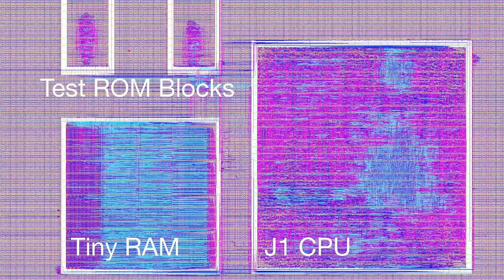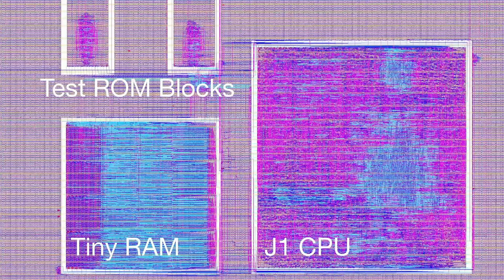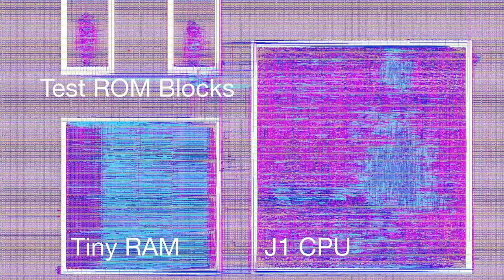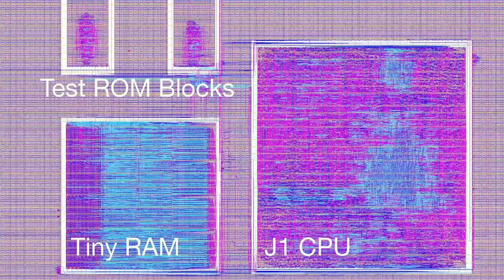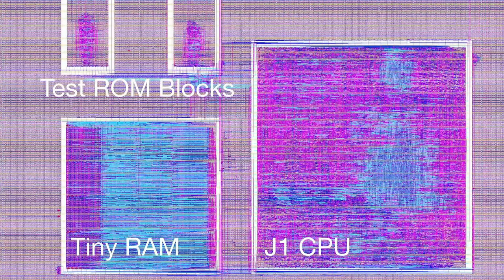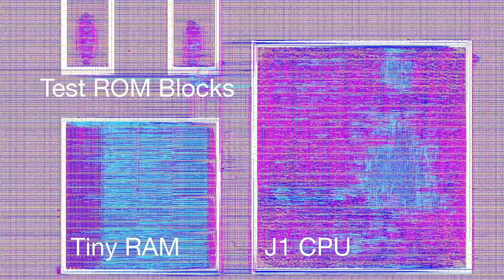We need to look at the tools and identify what standard cells, register file blocks, and SRAM blocks are missing. The SRAM situation is particularly bad — what should be 16 kilobytes is only 128 bytes. That is not reasonable. There's still a lot to do on the open side, but it's an exciting time because suddenly it's possible in a way that it wasn't before.